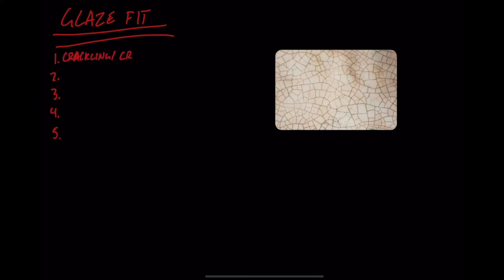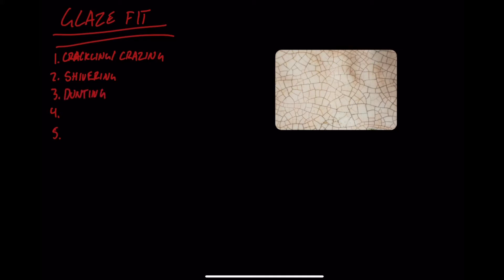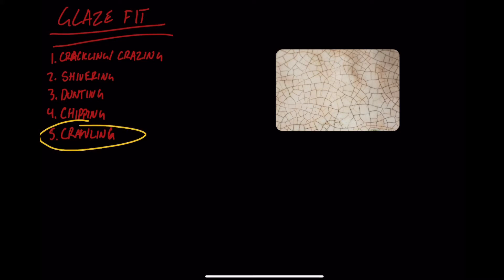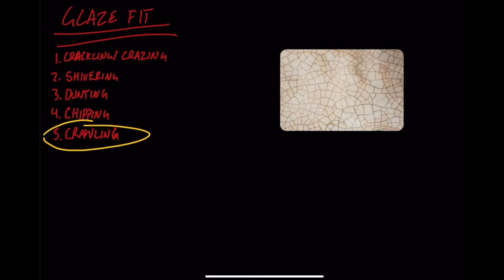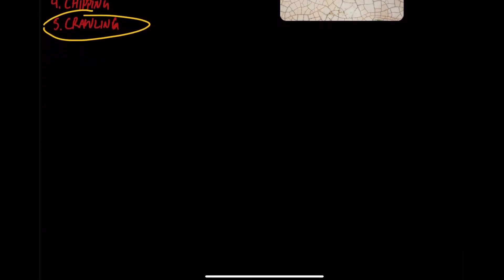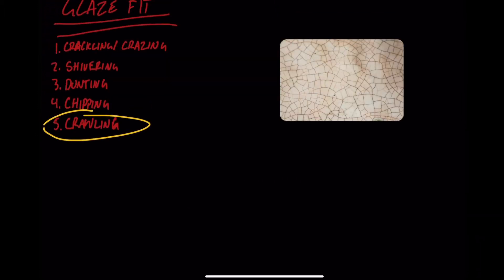In glaze fit there are five main topics we're concerned with: the first being crackling craze, the second being shivering, the third being dunting, the fourth being chipping, and the fifth being crawling. Four of these involve the two concepts I'm going to talk about, and crawling doesn't necessarily involve these two topics — it involves a different part of glaze fit.